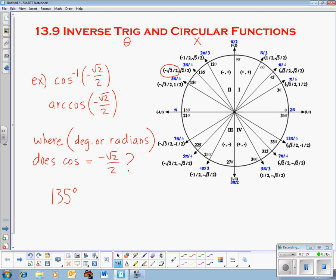So, what we would say is cosine inverse of negative square root of 2 over 2 equals 135 degrees. Or, we could say arc cosine of negative square root of 2 over 2 equals 135 degrees. So, these are going to require a really strong unit circle knowledge and the ability to go both ways, not just to say what's the cosine of 135, but also to say where is cosine equal to this value.